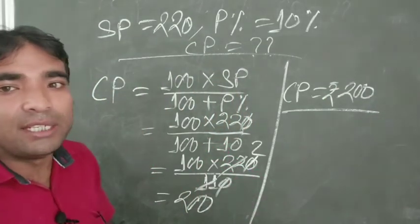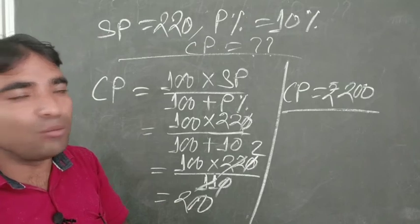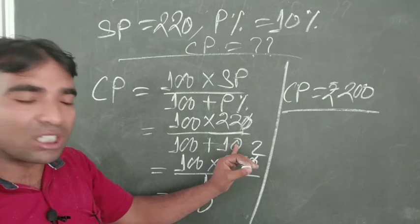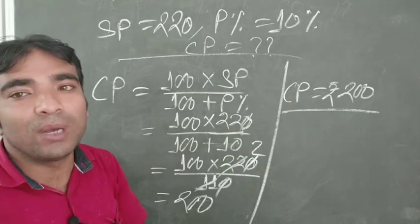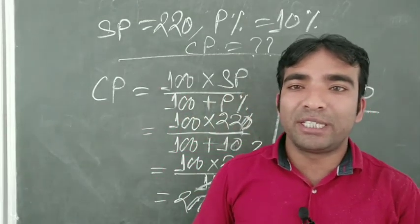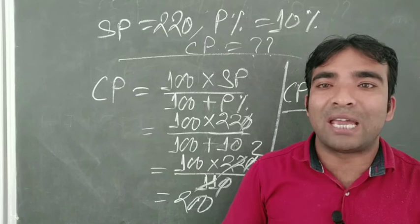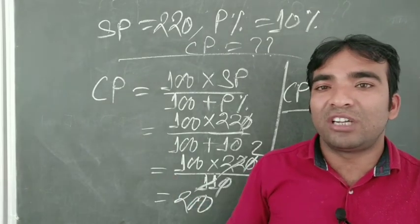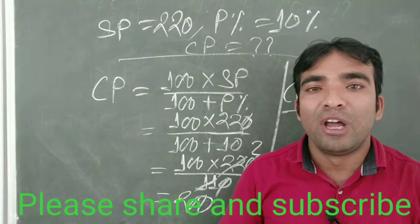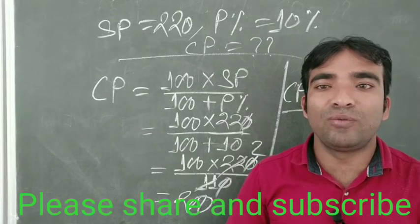By using this shortcut method we can easily find out CP. The same approach works for loss percentage — just use minus loss percentage in the denominator. Compared to the unitary method, this shortcut saves time. I hope this will be helpful for you in competitive exams. Please share and subscribe to my YouTube channel, Science Guru Sir. Thank you for watching.